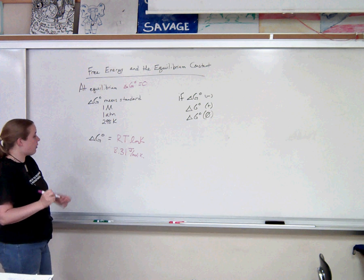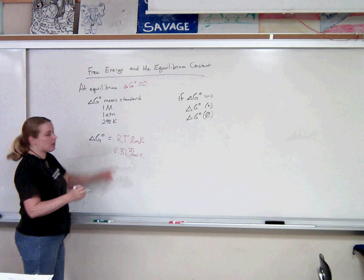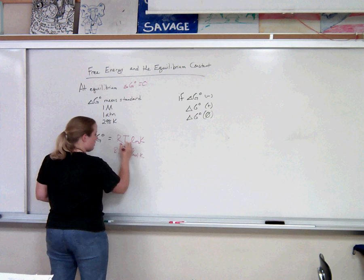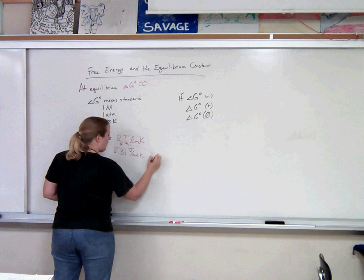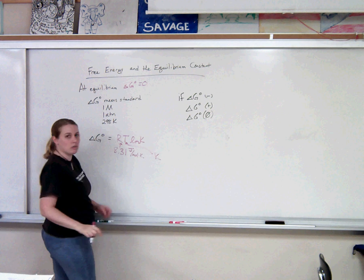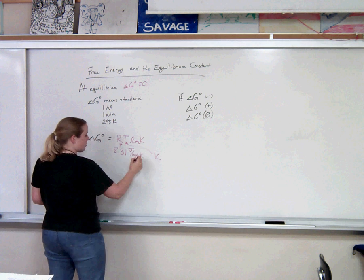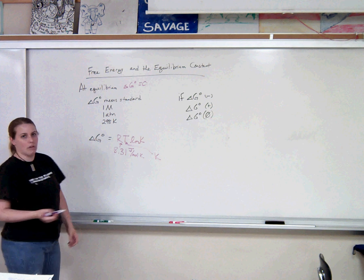So therefore, the temperature, as always, has to be in Kelvin. This is R. Temperature has to be in Kelvin. And we already know that K has no units. So then the Kelvin will cancel out with Kelvin, and we'll get Joules per mole, which is what we want for Gibbs.